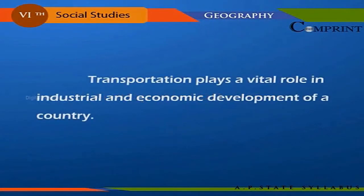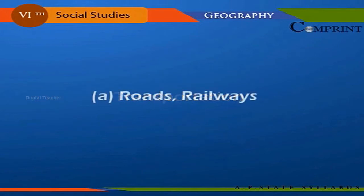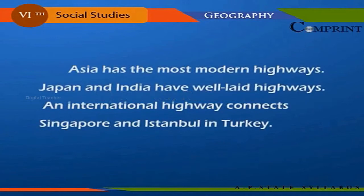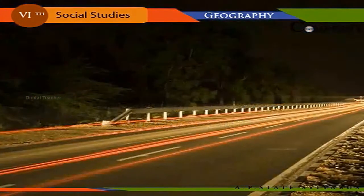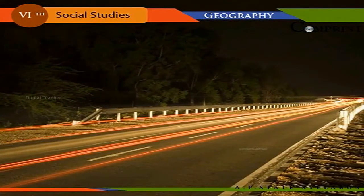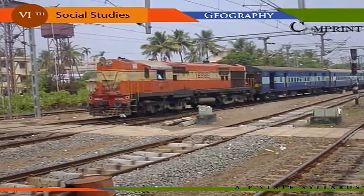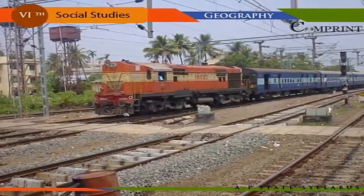Transportation plays a vital role in the industrial and economic development of a country. Asia has the most modern highways; Japan and India have well-laid highways. An international highway connects Singapore and Istanbul in Turkey. Important cities in India are well connected with national and state highways, with 3.34 million kilometres of roadways.